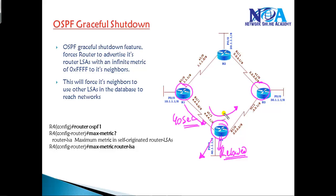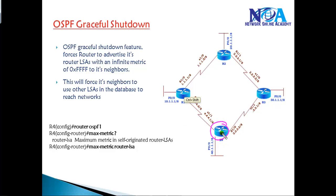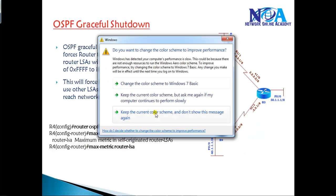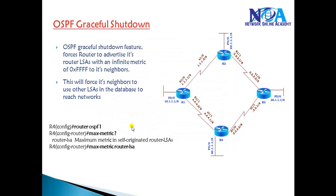Instead, a better option is to go to this router before rebooting and advertise it with a maximum LSA — that's what we call the graceful shutdown feature — advertising a router with an infinite metric. We configure this using the command `maximum-metric router-lsa` inside router mode. This router will then advertise all networks with the maximum infinite metric, forcing Router 1 and Router 3 to use the alternate path instead of going through Router 4.